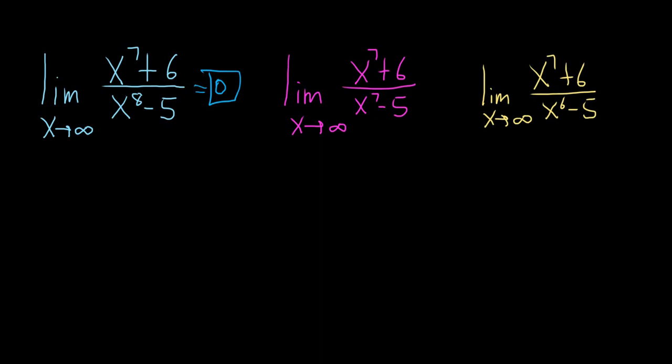So one way to figure out the answer by looking at it is to look at the degrees. The number here 8 is bigger than the number 7. So this piece here on the bottom grows faster than the piece on the top. So the bottom grows faster than the top, so eventually it gets really close to zero.